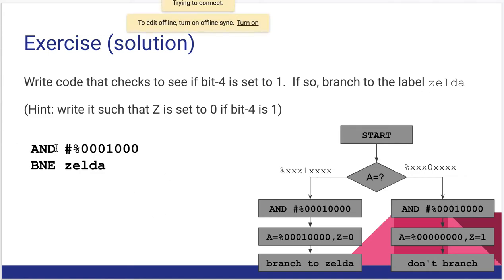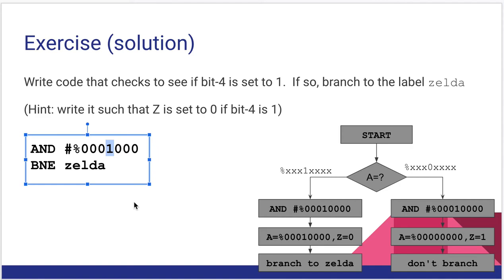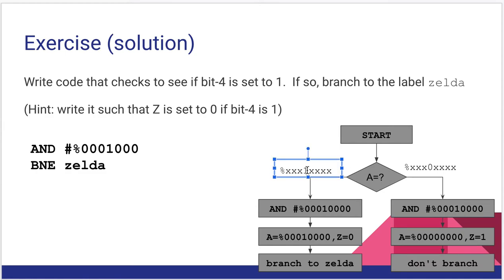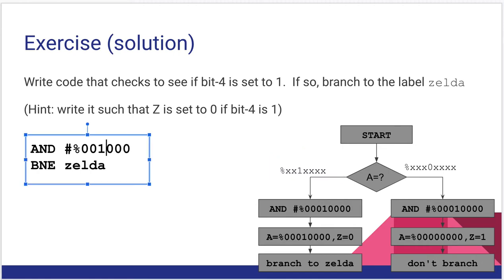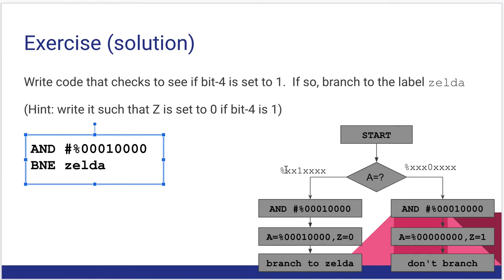Alright, here's the solution — hopefully you came up with something similar. Assuming we have something in our accumulator, we AND it with a bit mask where bit 4 is one and all other bits are zero, then branch to whatever comes after. Let me work through the correction on screen here — there needs to be an extra zero there. Now it's correct.